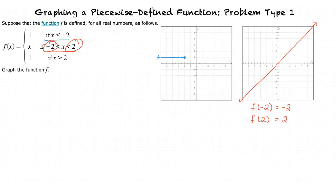Now let's plot these points on our graph. Keeping in mind that since the problem states that x is greater than but not equal to negative 2, our point at x is equal to negative 2 is not completely filled in. Same thing goes for x is equal to 2 — since the problem states that x is less than 2, the circle at x is equal to 2 is not completely filled in either. Now we can erase all parts of the graph outside the interval, and the resulting graph is the second portion of our piecewise function.